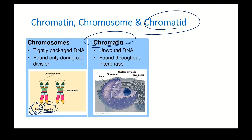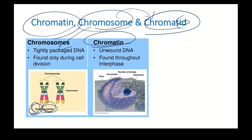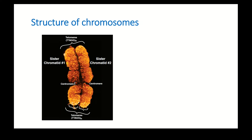You should understand the difference: chromosome is seen during cell division; chromatin is usually seen in the resting phase of the cell. Chromosome is made up of chromatids — sister chromatid one and sister chromatid two. Chromosome is also made up of a centromere; the center portion of the chromosome is the centromere.